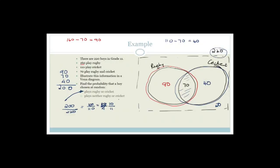For plays neither rugby nor cricket — that's the 20 outside the circles. So 20 out of 220 equals 1 out of 11. That is the probability that a boy chosen at random does not play rugby or cricket. And obviously you can change that to a percentage if you want.